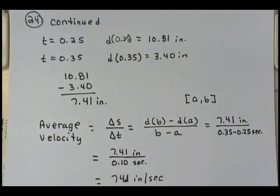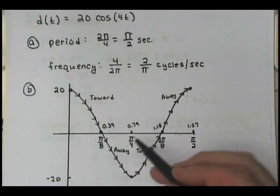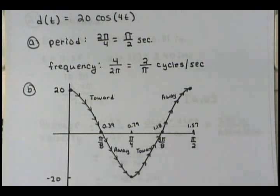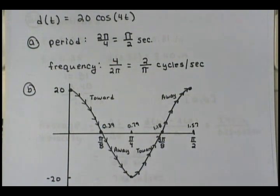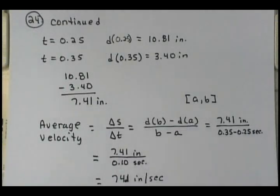The last part asks: do you expect a greater velocity for the interval t equals 0.55 to 0.6? Think about what your graph is doing from 0.55 to 0.6 — the object is going to be slowing down. So I would not expect a greater velocity there, because it's slowing down.